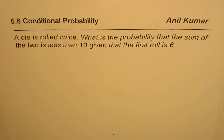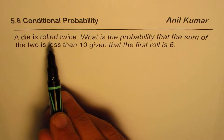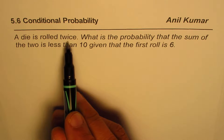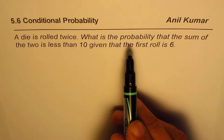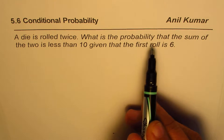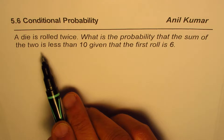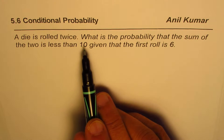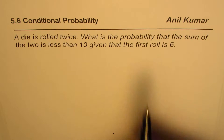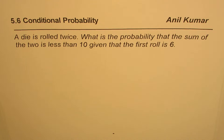I am Anil Kumar and in this video we will learn how to solve conditional probability questions. As an example, I have a die which is rolled twice. What is the probability that the sum of the two is less than 10, given that the first roll is 6?